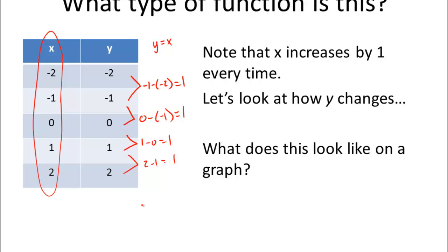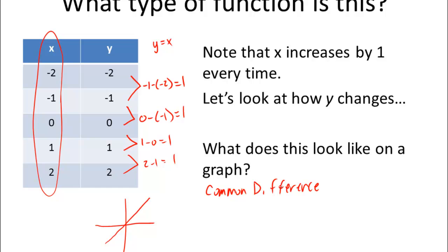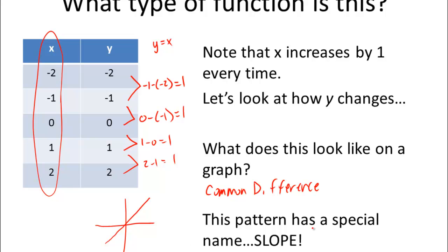That common first difference has a special name: it's the slope. It's the slope of your line. If x is increasing by 1 and the difference is always the same, it means it's a linear graph. In this case, the slope is 1. We'll talk more about slope later, but for now you just need to know that that is the slope of your graph.